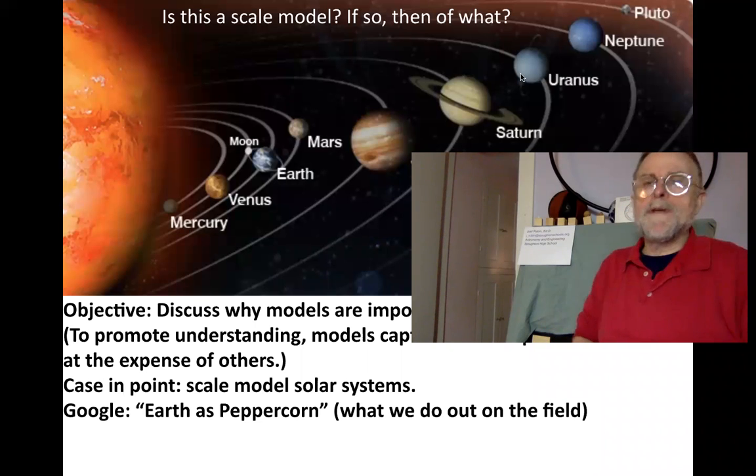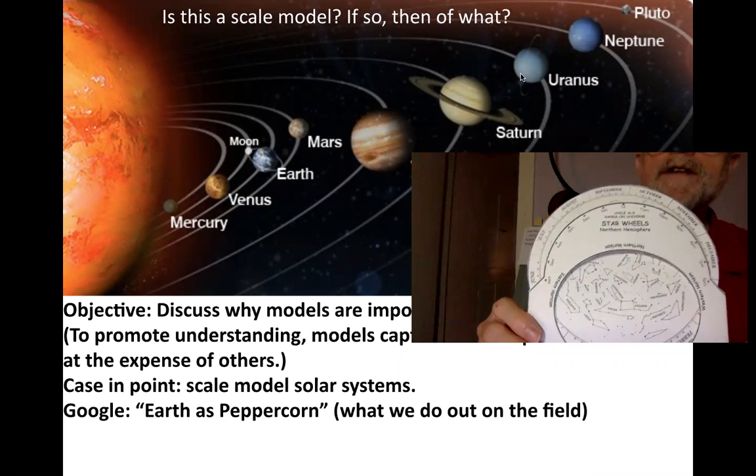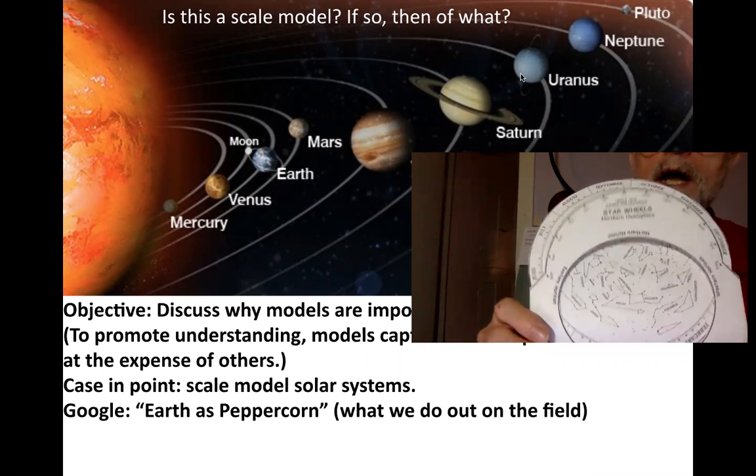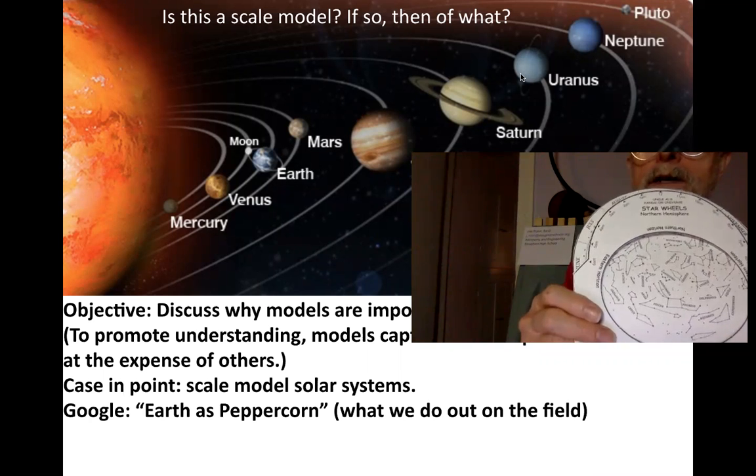Hi, my name is Joel Rubin, and I teach astronomy at Stoughton High School, where on the first day of class, students make Uncle Al's star wheel. But I ask you, why don't we see the planets on the star wheel?